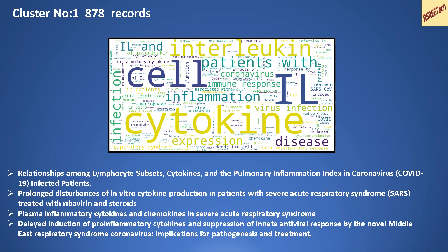Cluster number 1 has close to 878 papers. The word cloud shows words like 'cytokine' and 'interleukin', which are terms related to inflammation and immune response — the cytokine storm being cited as a major cause of mortality. The titles also reflect this, with papers on cytokine storm and pulmonary inflammation. This cluster has the relevant papers for those topics.